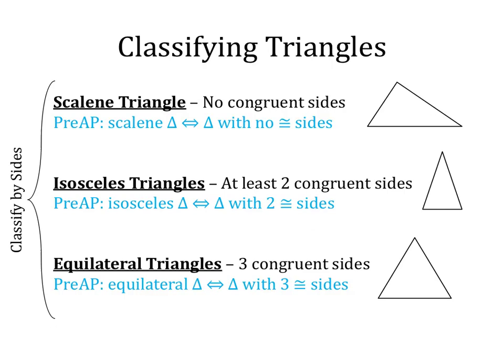First, we have a scalene triangle. Scalene triangles have no congruent sides, so you'll see them marked with a different number of tick marks on each side, because none of the sides are congruent to each other.